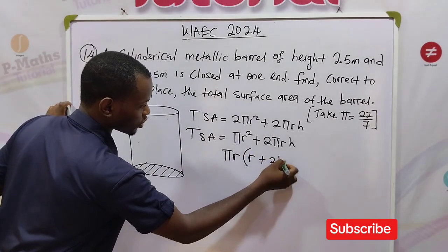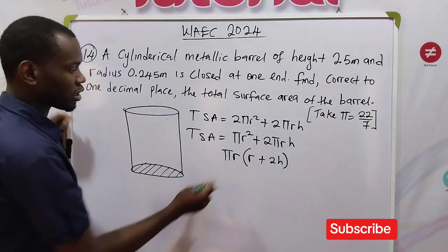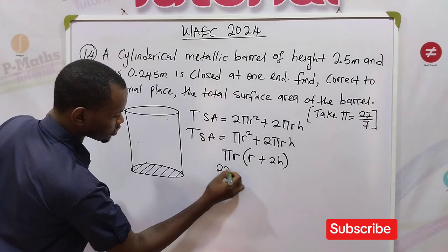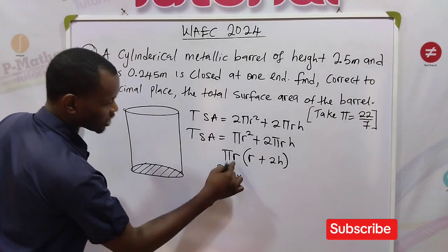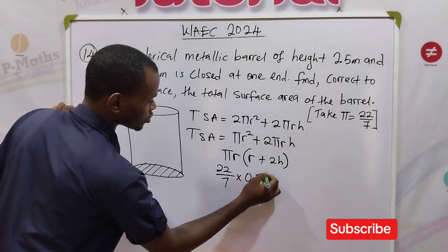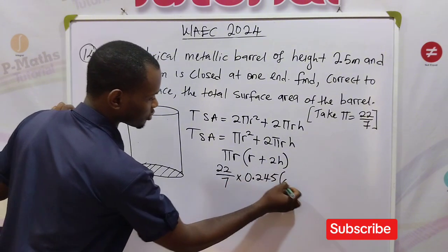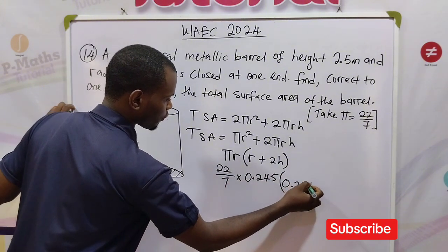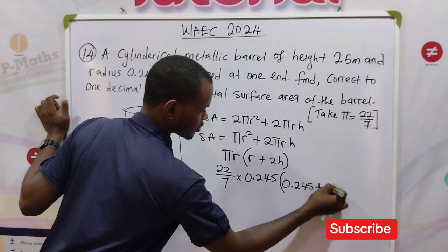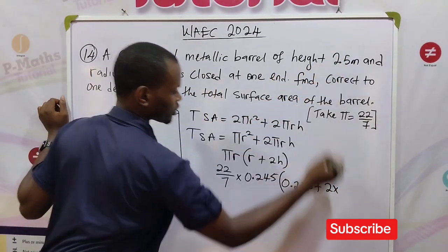Let's substitute into this formula. Our π is 22/7 times radius 0.245 into radius again 0.245, plus 2 times h, that is 2 times 2.5 meters.